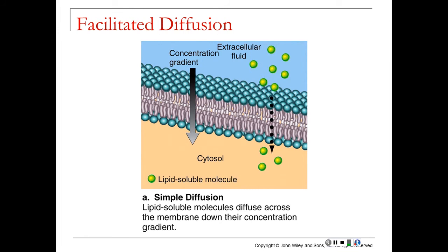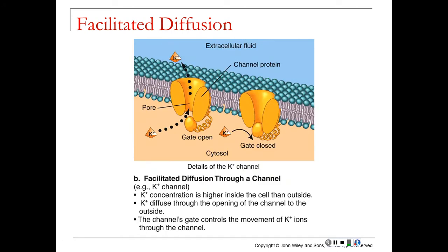Here you can see our concentration gradient. We have a higher concentration of a lipid soluble molecule outside of the cell; through simple diffusion, those molecules are just going to diffuse straight through the cell membrane. In facilitated diffusion, our molecules — in this case potassium — may use a channel protein. Potassium is an ion, and ions have a charge. Our cell membrane doesn't like to let charged molecules through because the inner hydrophobic region repels these charged ions. So those charged ions go through a channel protein which acts as a pore, letting the potassium go in or out as needed.